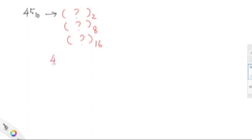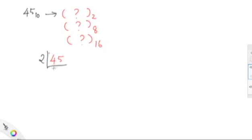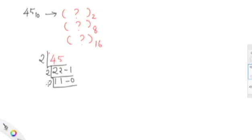Now we see how this conversion of 45 takes place using the divide method. What you have to do is divide the number by 2 and write the remainder. So 45 divided by 2: two 22s are 44, remainder is 1. Continue dividing: 22 divided by 2, remainder is 0. Then 11 divided by 2: two fives are 10, remainder is 1. Then 5 divided by 2: two twos are 4, remainder is 1.